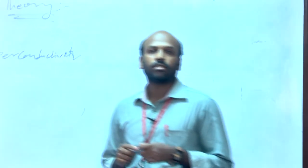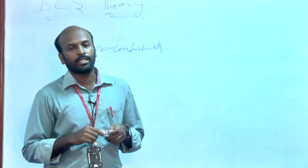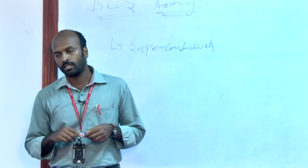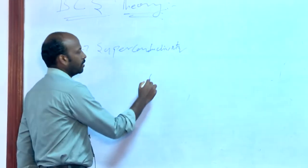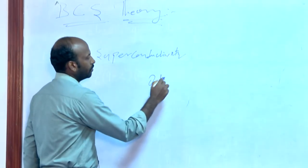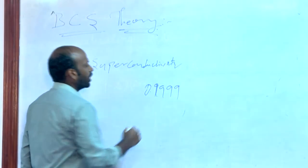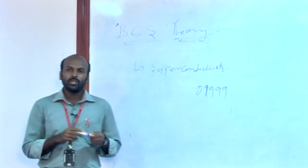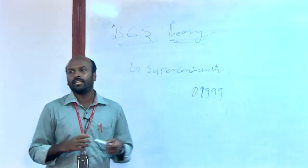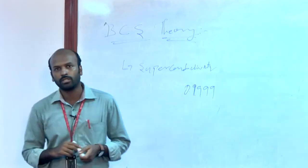Superconductivity means it has zero resistance. Theoretically we can say that it has zero resistance, but it is not possible practically — it means the resistance is very, very low, like 0.999 and so on. So theoretically we can say a material can have zero resistance.